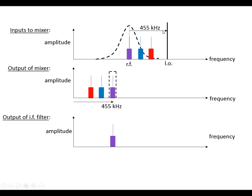At 455 kilohertz above the resonant frequency we've got the local oscillator. The output of the mixer is at 455 kilohertz. We find that we get the purple station because the difference between the local oscillator and radio frequency is 455 kilohertz in this case.